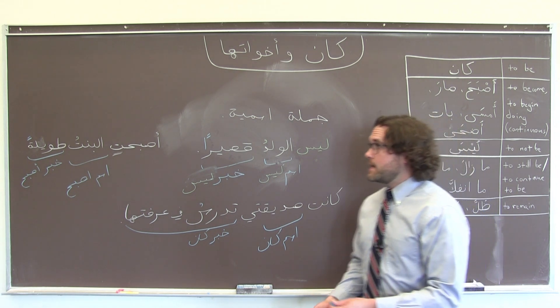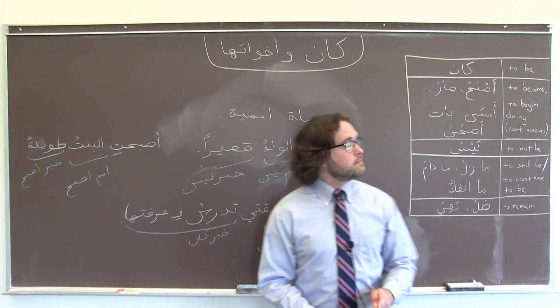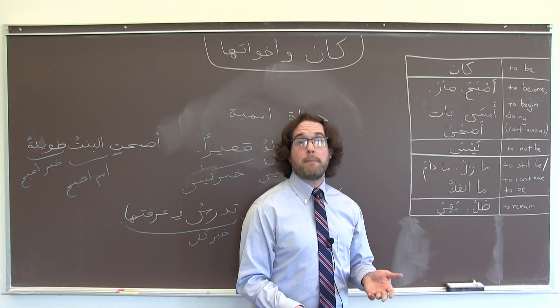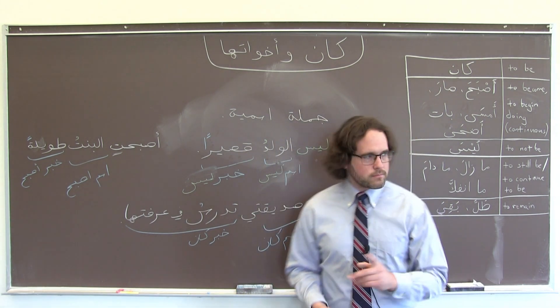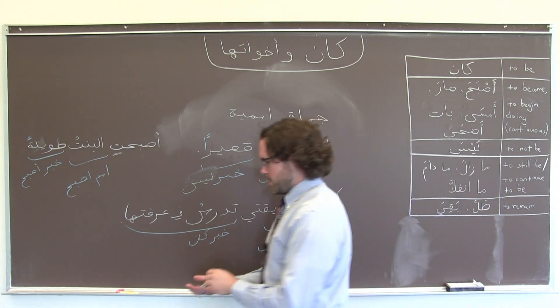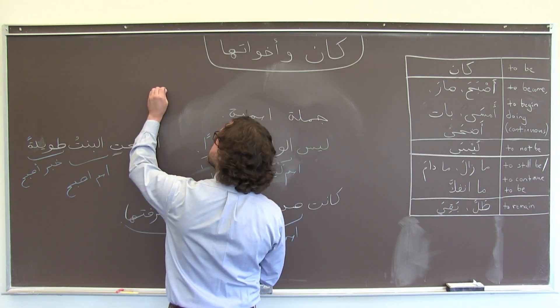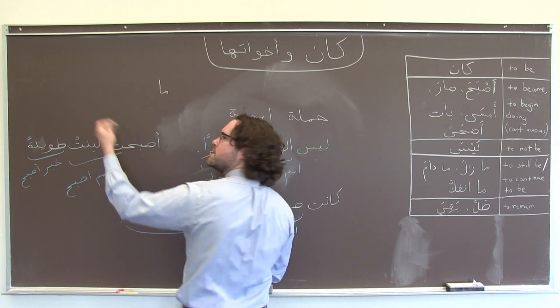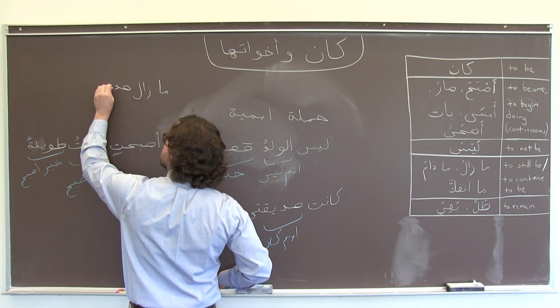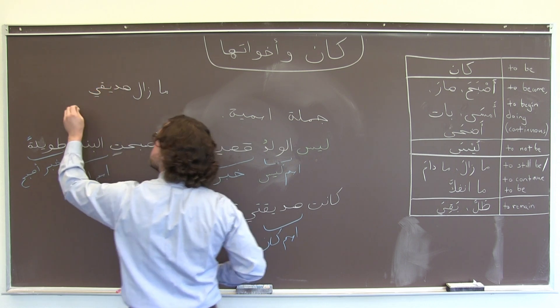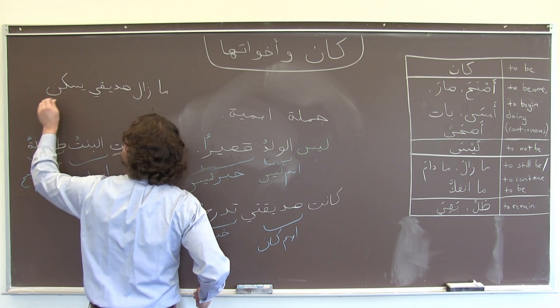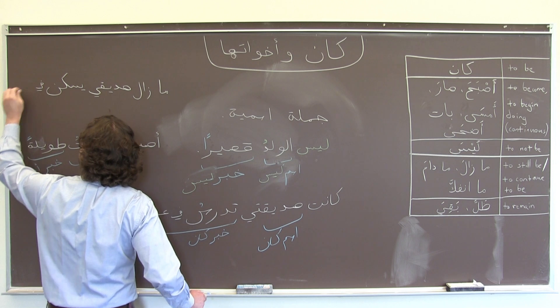One final example, if I wanted to say, my friend is still living in Amman, then I would take this verb for still being, and I would say, let's make it a male friend this time. ما زال صديقي يسكن في عمان.